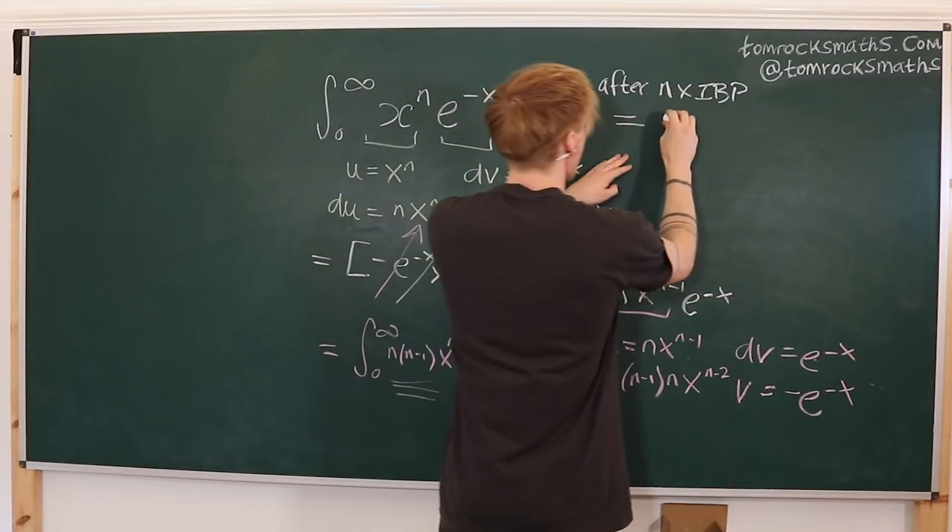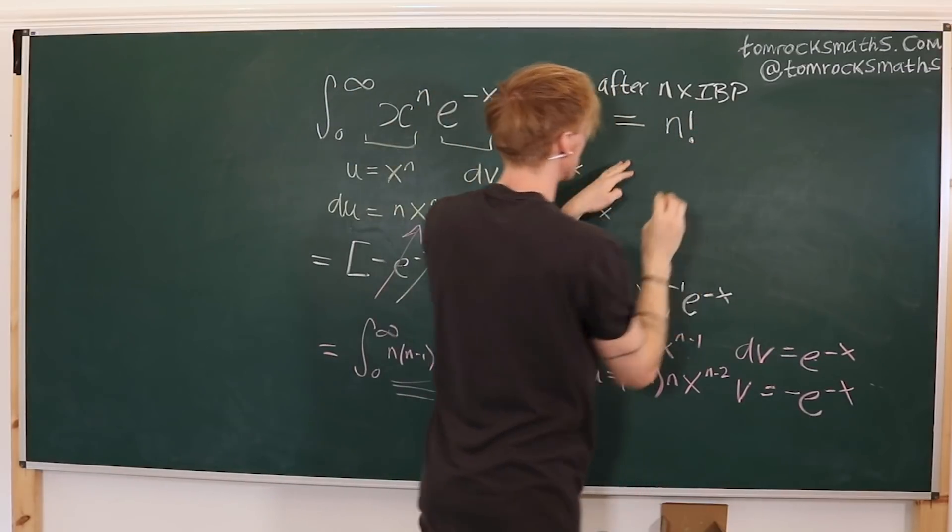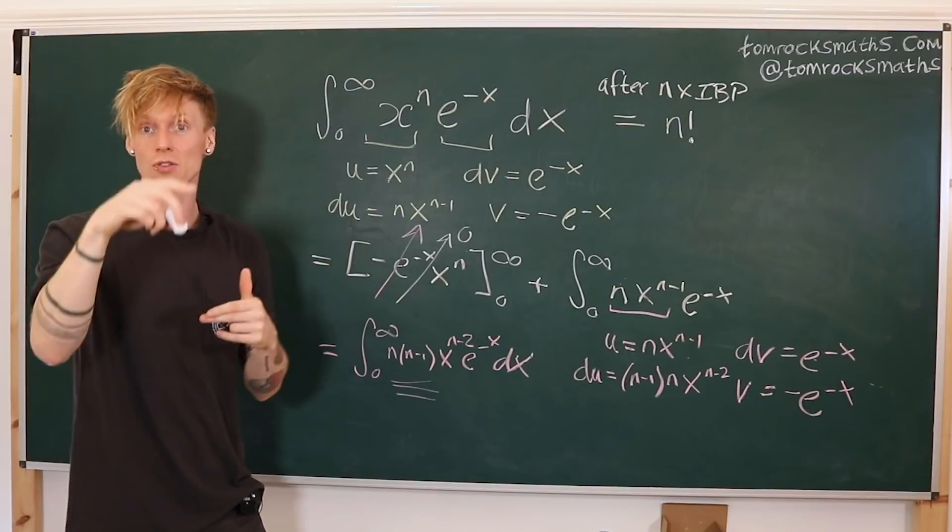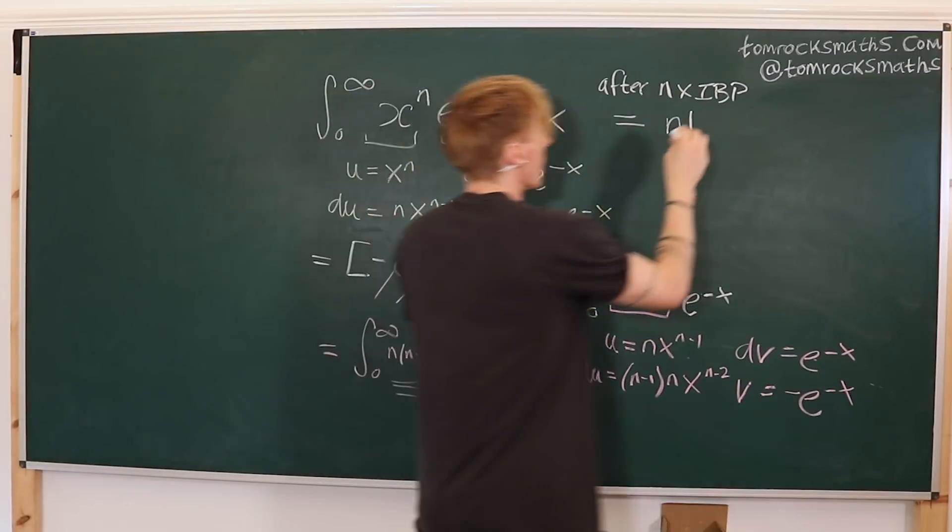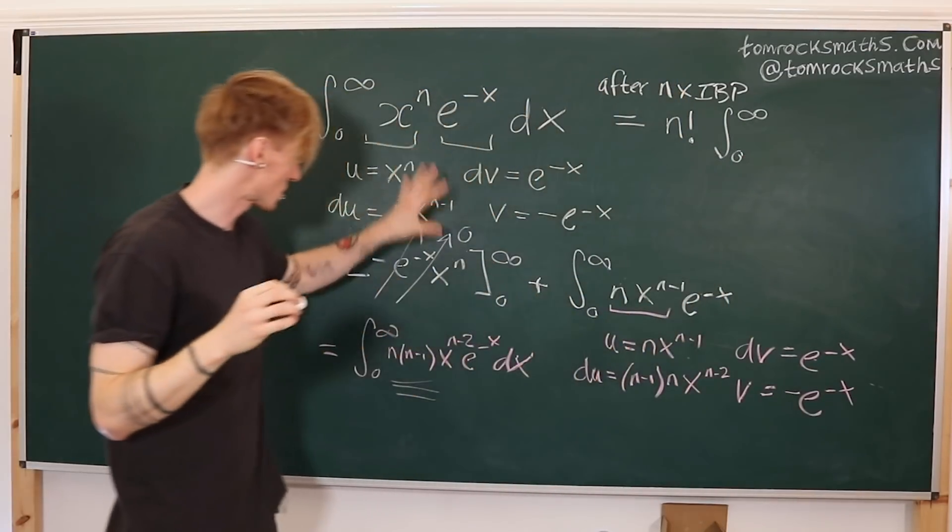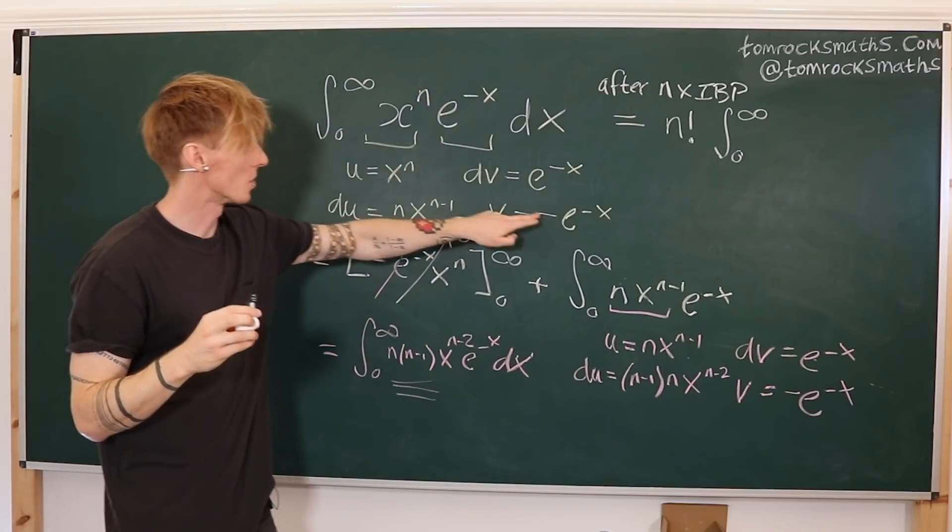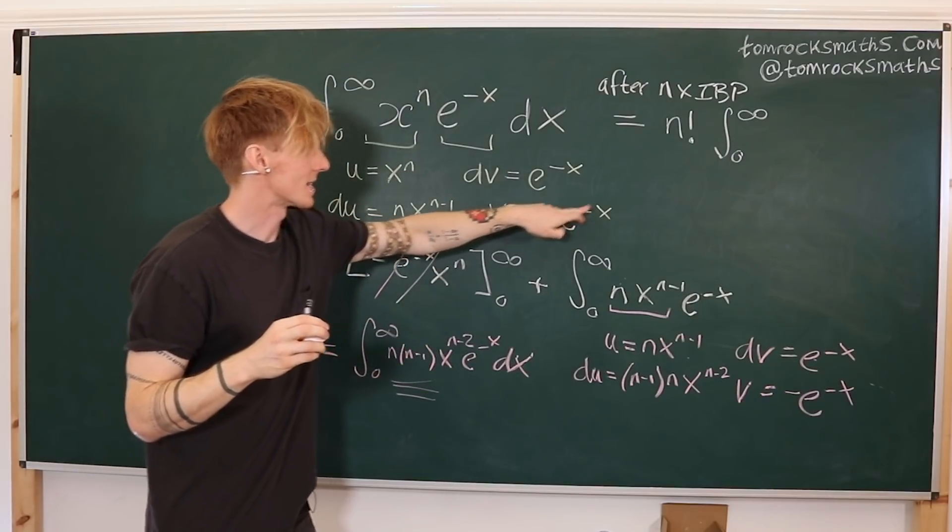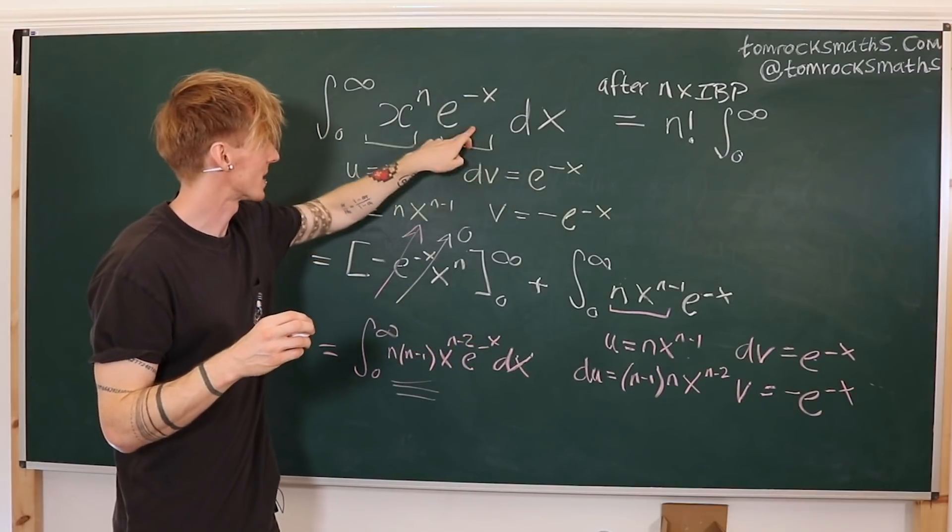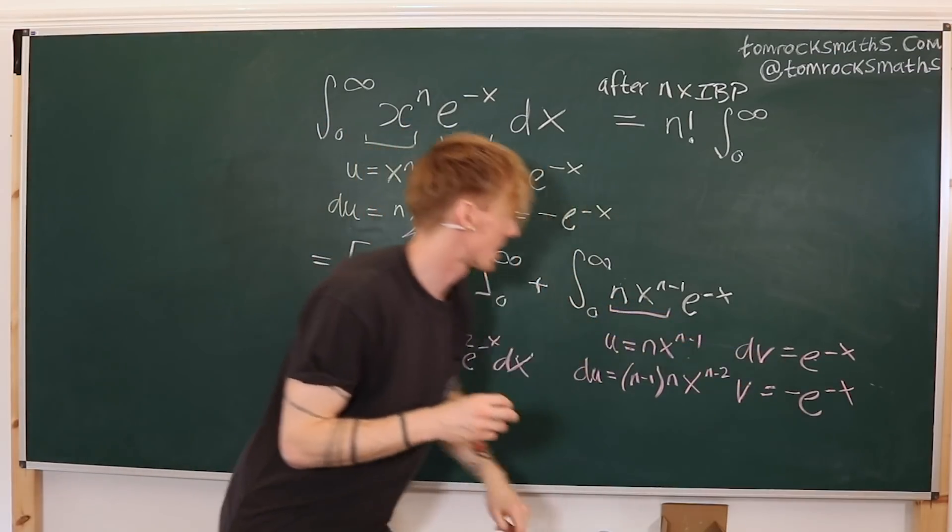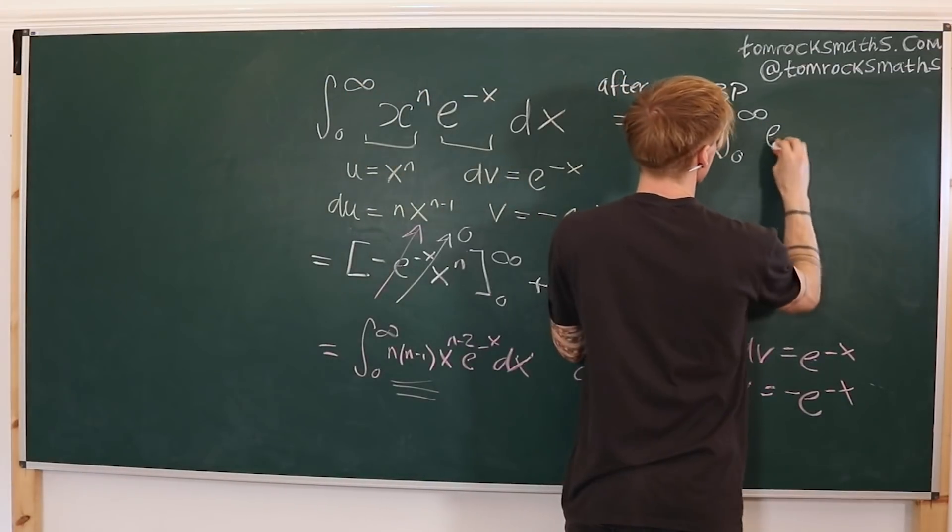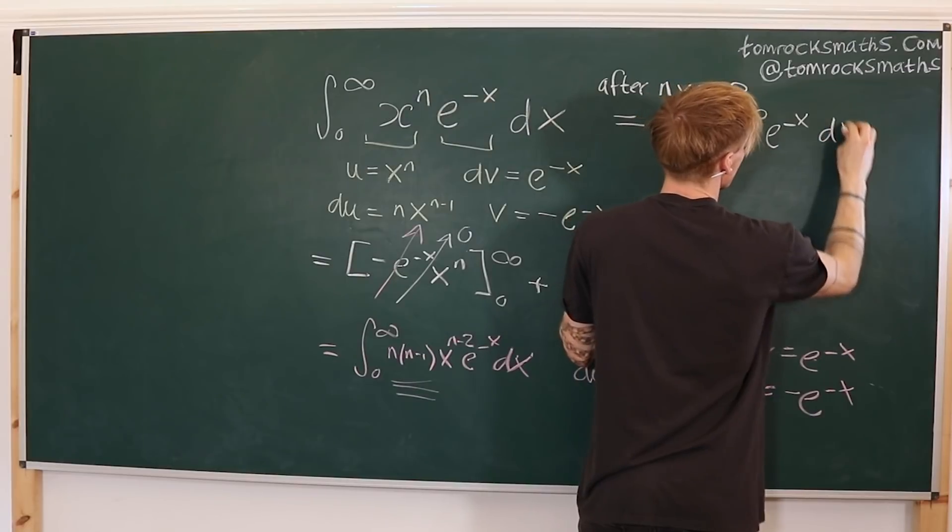So we have n factorial. Then we've got x to the n minus n, x to the 0, 1. And then we have the integral from 0 to infinity. And we've seen at each step that v is always minus e to the minus x, and dv is e to the minus x. So dv here, e to the minus x, e to the minus x, and it would be the same here. So that term is unchanged, e to the minus x dx.